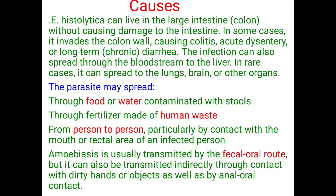Causes: E. histolytica can live in the large intestine without causing damage. In some cases, it invades the colon walls causing colitis, acute dysentery, or long-term diarrhea. The infection can also spread through the bloodstream to the liver, and in rare cases to the lungs, brain, or other organs. The parasite may spread through food or water contaminated with stools, through fertilizer made of human waste, or from person to person particularly by contact with the mouth or rectal area of an infected person.